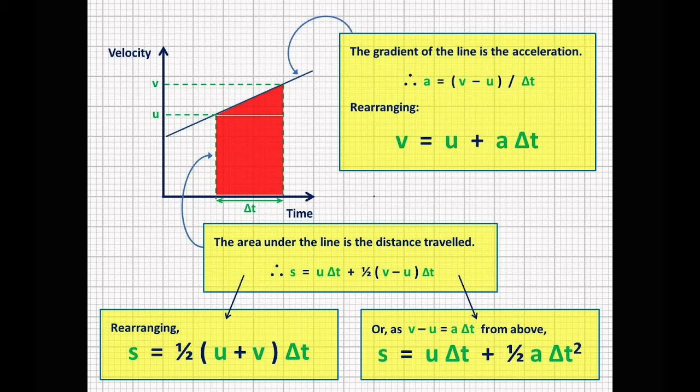Now the s equals ut plus one half at squared is called the position equation. And then v equals u plus at is the velocity equation. Those are the two most important SUVAT equations to know, and they are used so often in kinematics.